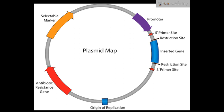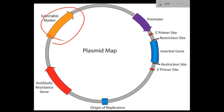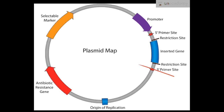This is the diagram of a typical plasmid. This is the origin of replication — the place where alien DNA has to be linked so that it can replicate. This is a selectable marker, and this is a restriction site between the two antibiotic resistance genes, showing the restriction site and the inserted gene.